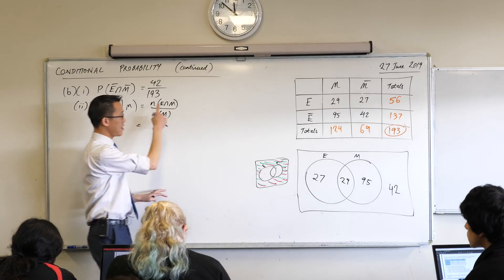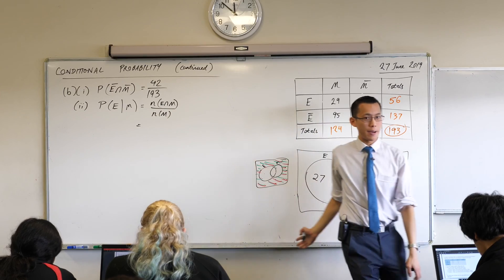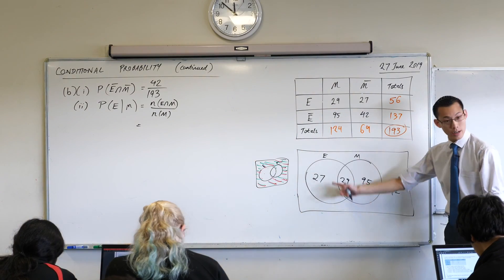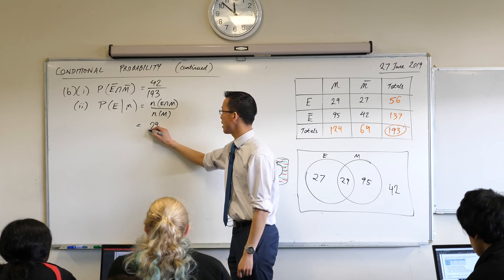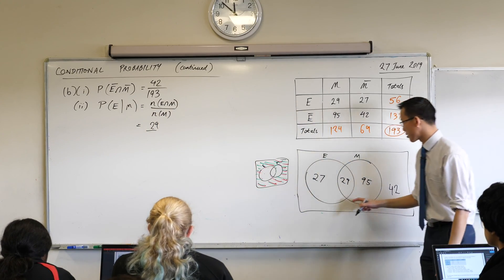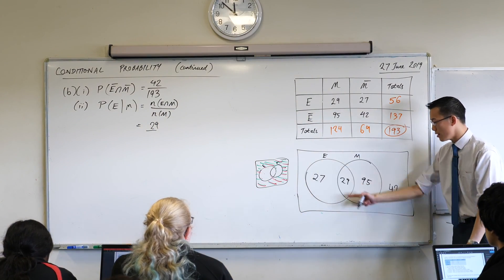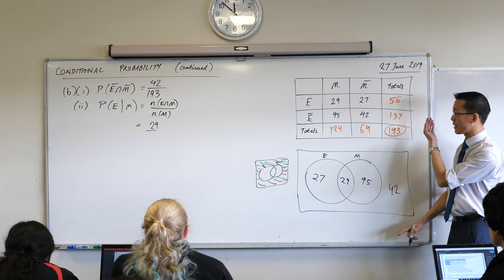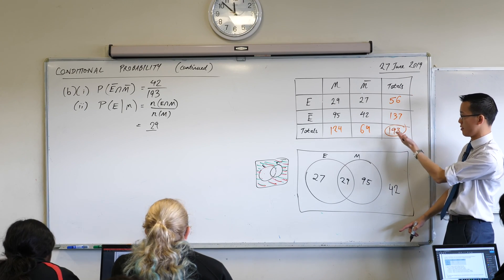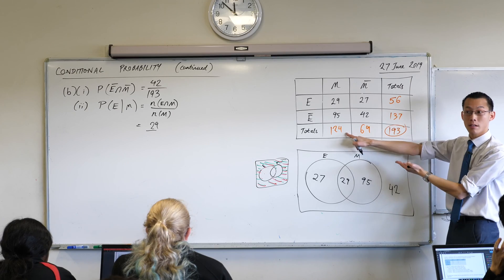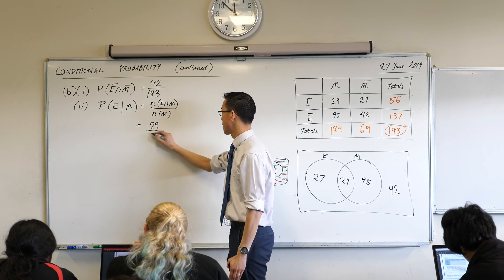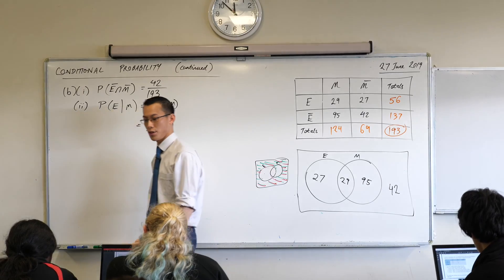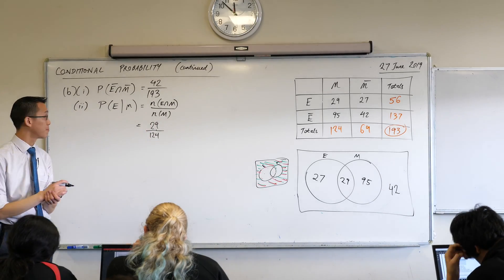Alright, let's have a look. E intersect M. Where's that on my diagram? It's the 29, it's the overlap, isn't it? So I'm going to write that right at the top, 29 over, and then I've got the number of people in this circle, which handily I have already calculated, where is it? It's here, isn't it? Yeah, there we go. I've already got this number, 124, and we're done. I even know I can't simplify it because 29 is prime, okay?